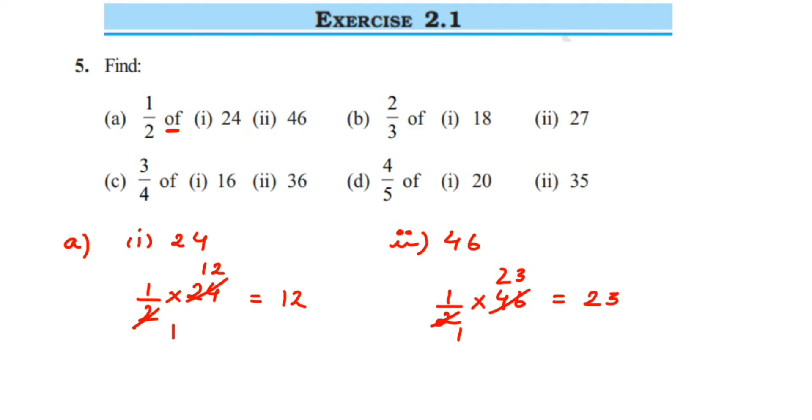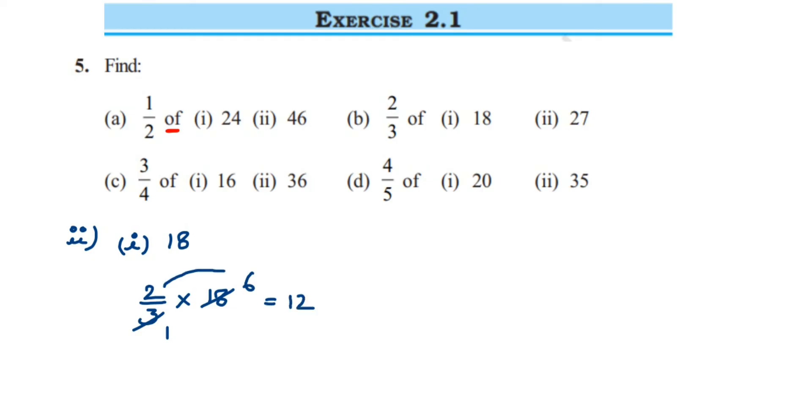The next one, second question: we have 2/3 of 18 and 27. So first number is 18. So 2/3 of—'of' means multiplication sign—and 18. We can cancel three and 18 in a three table: three ones are three, three sixes are eighteen, so we're left with two and six in the numerator. Multiply them: two sixes are twelve, so twelve is the answer.